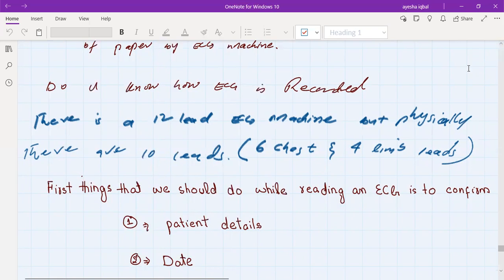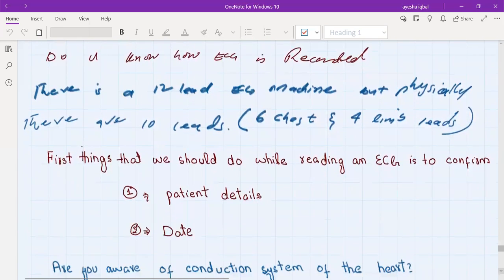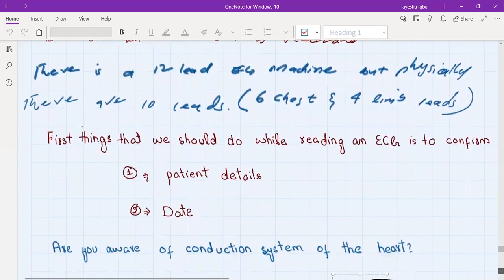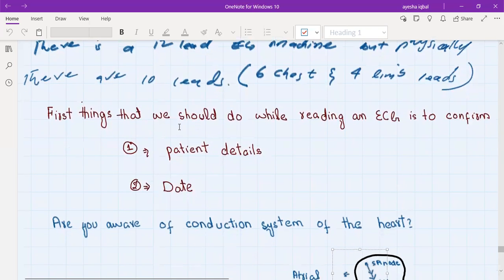We'll tell the student that the first thing that we should do while reading an ECG is to confirm the patient details and the date, so that we are sure that we are reading the correct person's ECG and it's the most recent ECG for them.